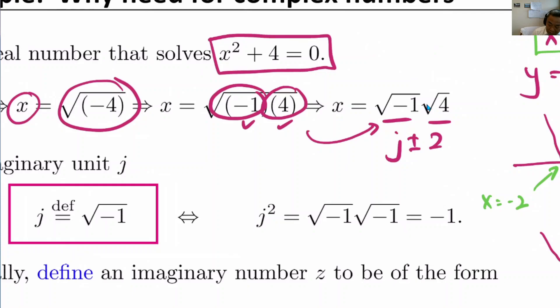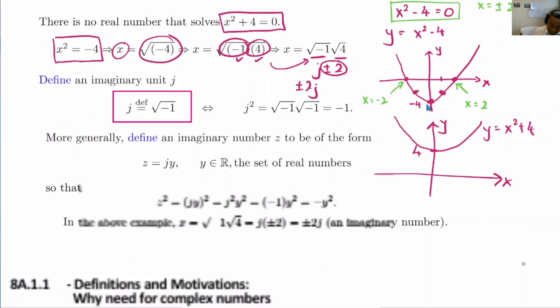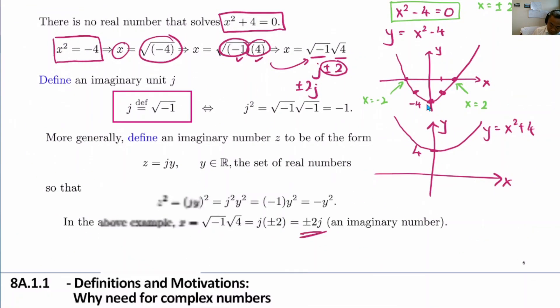So the answer is plus and minus 2j is the answer. Okay, so look here, we can solve if we admit the use of imaginary numbers. Then x squared equals minus 4 has two solutions, which are imaginary numbers, purely imaginary numbers, plus and minus 2j.